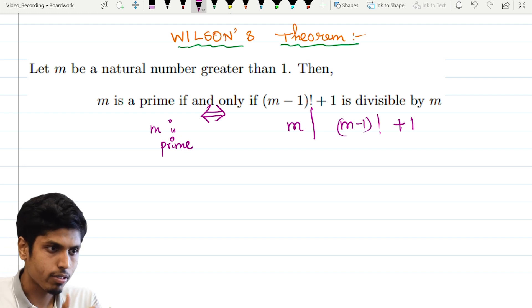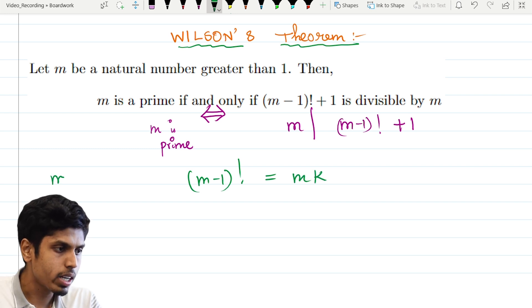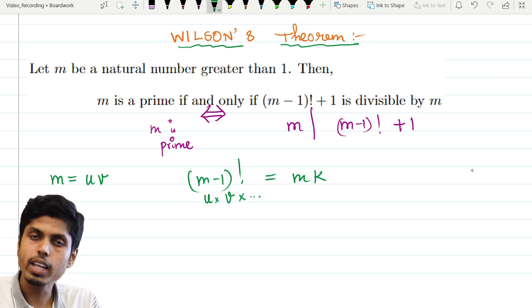That is, m dividing m minus 1 factorial plus 1 implies m is prime. Why would that be trivial? Because if you consider m as composite, then you will get that m minus 1 factorial is some multiple of m. Because if m is composite, it can be written as product of two numbers, let's say u and v, where u is also less than or equal to m minus 1 and v is also less than or equal to m minus 1, and they are different.